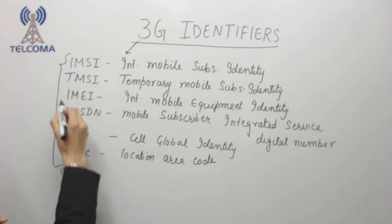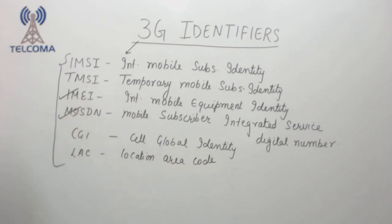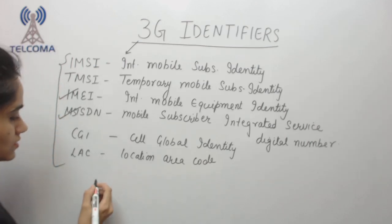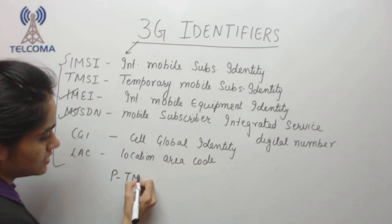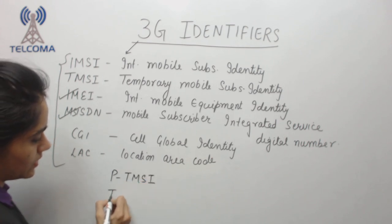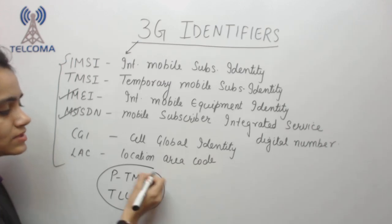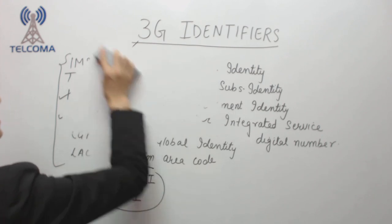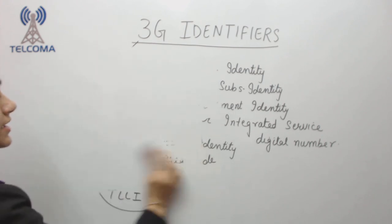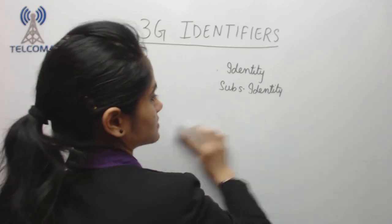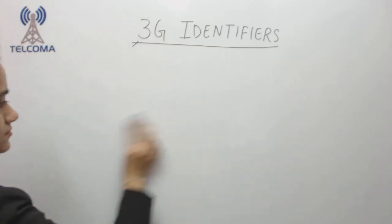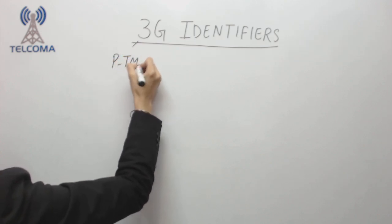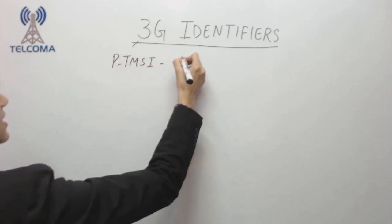All of these identifiers are used for call purposes, equipment purposes, and user identification. For data access, as in GPRS, we use two main identifiers: P-TMSI and TLLI. These are new for GPRS and are also used in 3G. The other identifiers have already been covered in the GSM class.